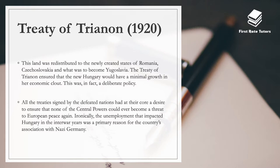The land Hungary lost was redistributed to Romania, Czechoslovakia, and what became Yugoslavia. The Treaty of Trianon ensured that the new Hungary would have minimal clout — a deliberate policy to weaken it. All the treaties signed by defeated nations had at their core a desire to ensure that none of the central powers would ever become a threat to Europe again. Ironically, the unemployment that impacted Hungary in the interwar years as a result of this treaty became a primary reason for its association with Nazi Germany and its role in the Second World War.